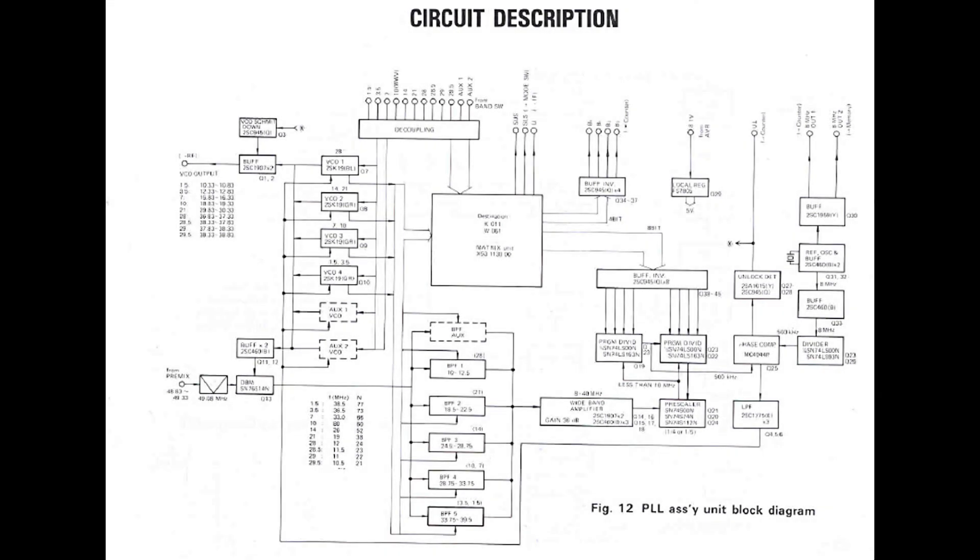Now, to debug this part of the transceiver, we have to understand how the PLL, which is the acronym for Phase Locked Loop, works in a multiband radio. At the very least, in this case, we have to identify what parts of the PLL circuit depend on the band being selected.